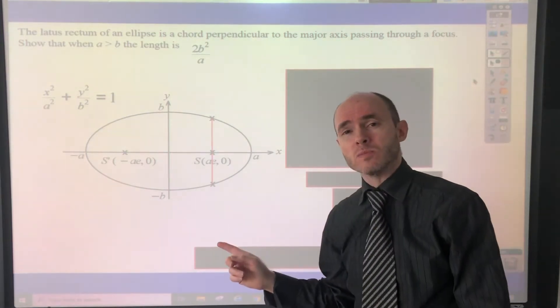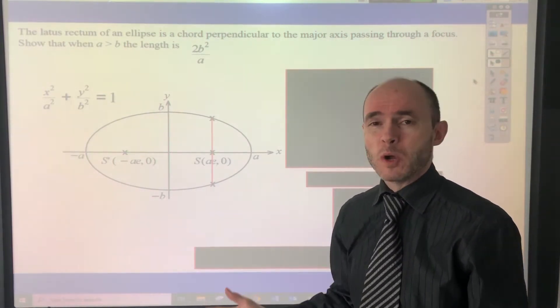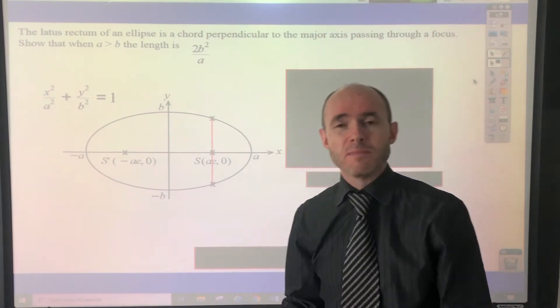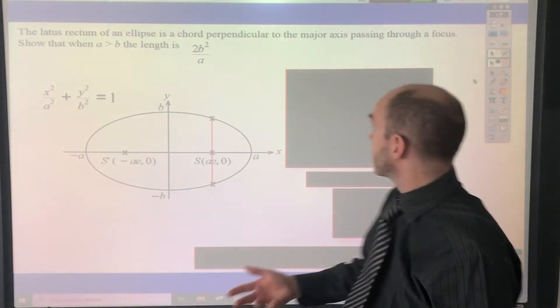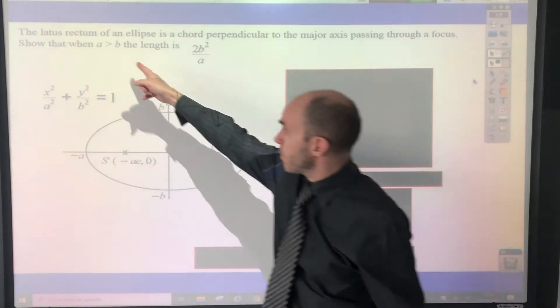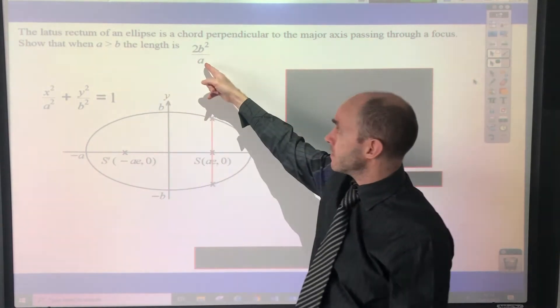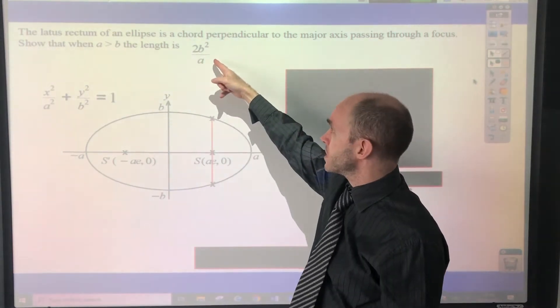You've got the lattice rectum of an ellipse, it's a chord that's perpendicular to the major axis, and it passes through one of the focus points. We need to show that when a is greater than b, the length of this lattice rectum is 2b squared over a.